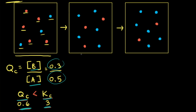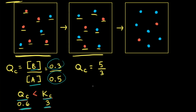Comparing the first two particulate diagrams: in the first, we had 3 blues and 5 reds; in the second, we have 5 blues and only 3 reds. This shows the reaction moved right, increasing products and decreasing reactants. Calculating QC for the second diagram: 5 over 3, or 5/3. KC is still equal to 3, so QC is still not equal to KC — the reaction is not yet at equilibrium. Since Q is still less than K, the net reaction will move to the right again.